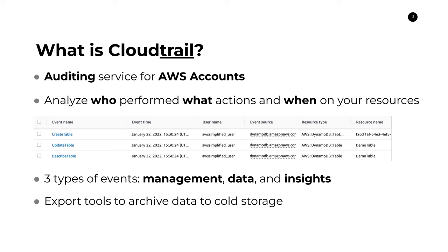One other thing to point out is that the three different types of events — management, data, and insights — allow you to create separate trails that include different portions. So you can have a trail that includes management data, one that includes management and insights, and each of the different trails can have a different delivery destination, so you can get copies of the same data if you wanted to replicate it. That's the main idea of CloudTrail — it's meant for auditing access to your AWS accounts.